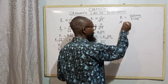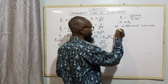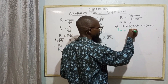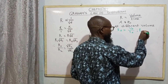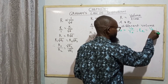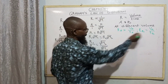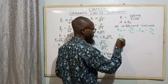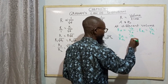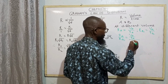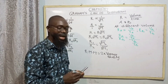For different volumes, the rate of diffusion of gas A equals volume of gas A over time of A, while rate of diffusion of gas B equals volume of gas B over time of gas B. So from here, RA over RB equals VA over TA divided by VB over TB. That is when the volumes are different.